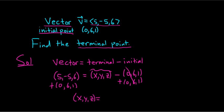So 5 plus 0 is 5. Negative 5 plus 6 is 1. And 6 plus 1 is equal to 7.